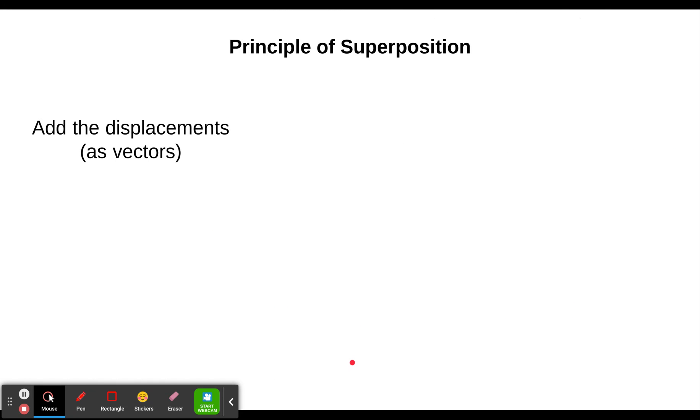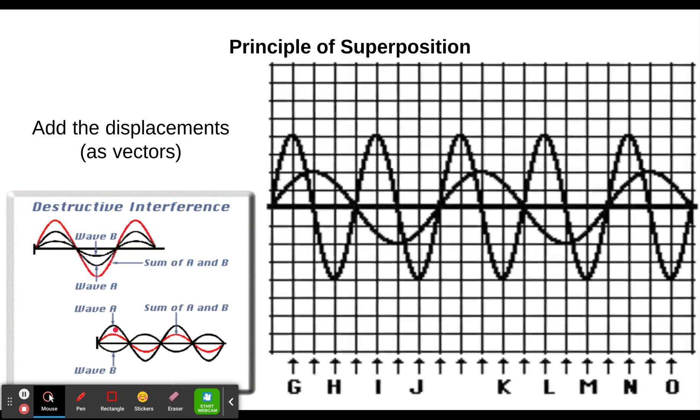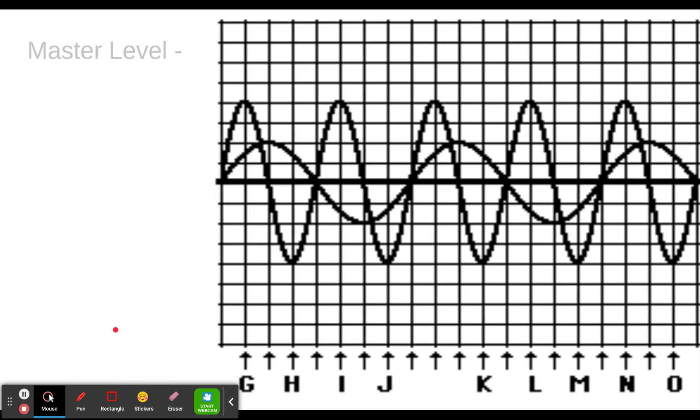Now we can take a look at the next idea, which is, can we be more specific than is it getting smaller or bigger? How do we deal with that mathematically? Well, we just add the displacements. Remember, displacements are vectors, so the direction matters. Is it positive or negative matters? If you take a one plus a two, you get a three. If you take a two plus a negative one, you get a one.